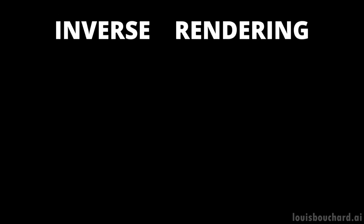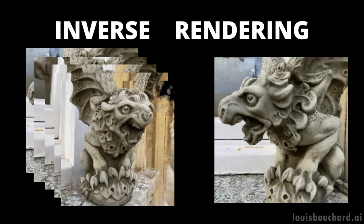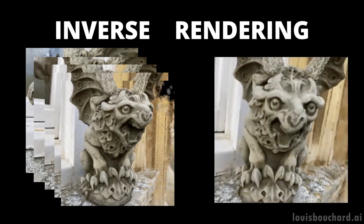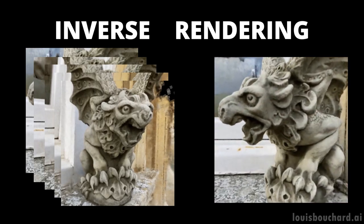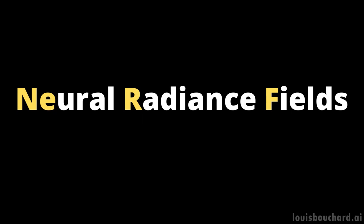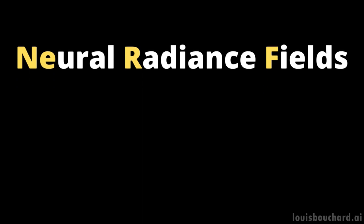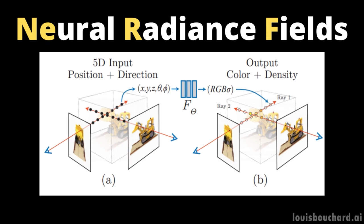Instant Nerf attacks the task of inverse rendering, which consists of rendering a 3D representation from pictures — a dozen in this case — approximating the real shape of the object and how light will behave on it so that it looks realistic in any new scene. Here, Nerf stands for Neural Radiance Fields. I will only do a quick overview of how Nerfs work as I already covered this kind of network in multiple videos, which I invite you to watch for more detail and a better understanding. Quickly, Nerfs is a type of neural network. They take images and camera settings as inputs and learn how to produce an initial 3D representation of the objects or scenes in the picture.